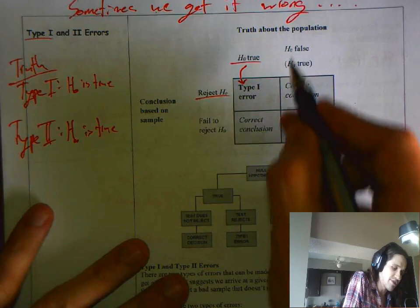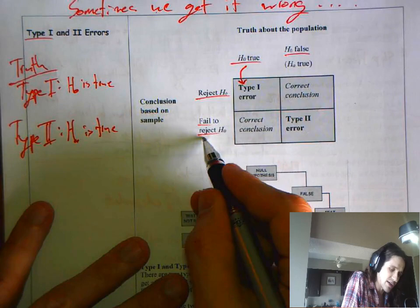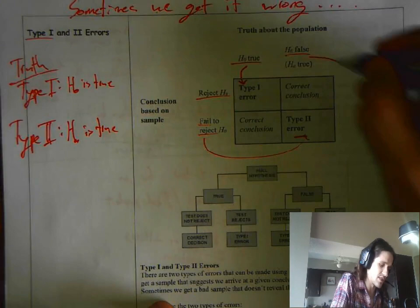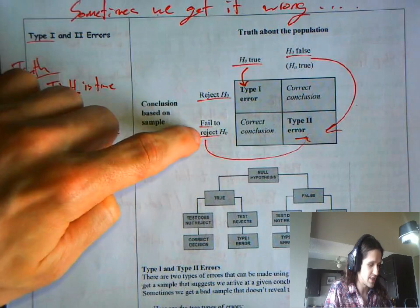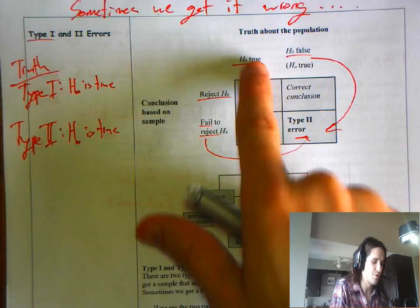But maybe the null is false. Maybe the null is false and needs to be rejected because the alternative is true. Reject the null, but you didn't do it. You failed to reject. That's a type 2 error. So, this is confusing. You want to reject a false null. You want to fail to reject a true null. These are correct conclusions over here.